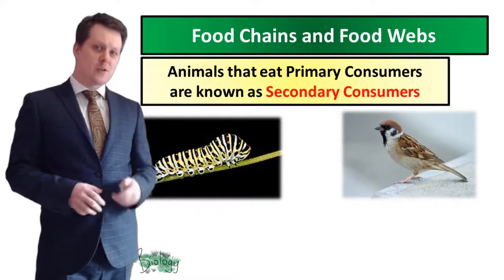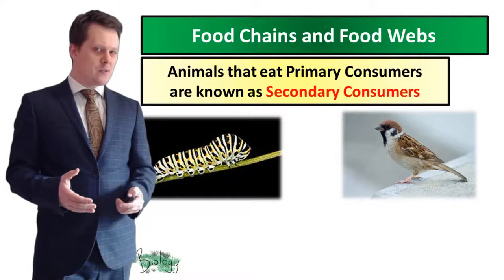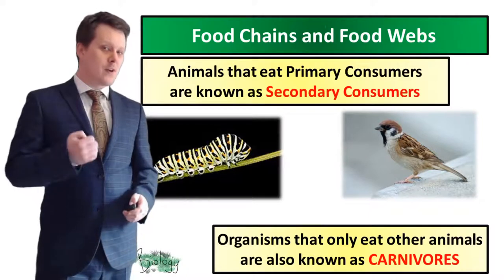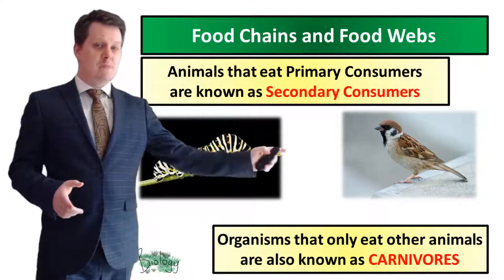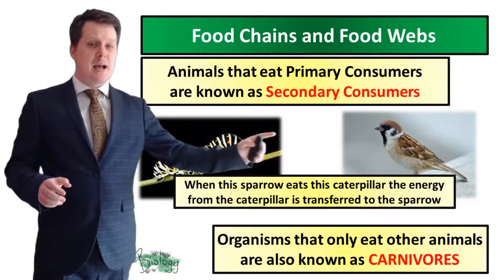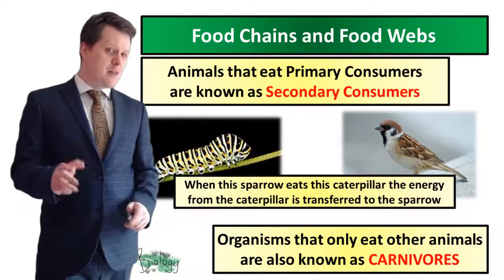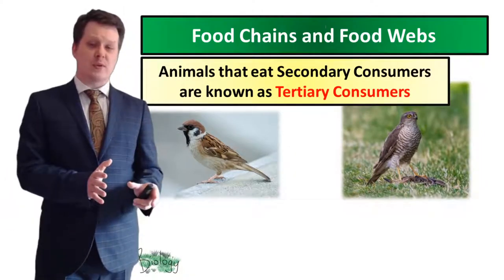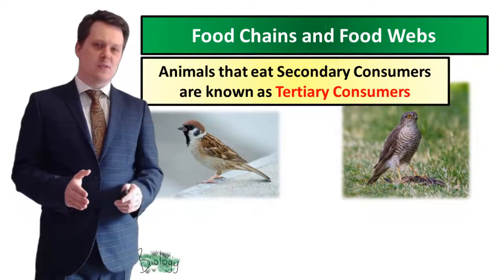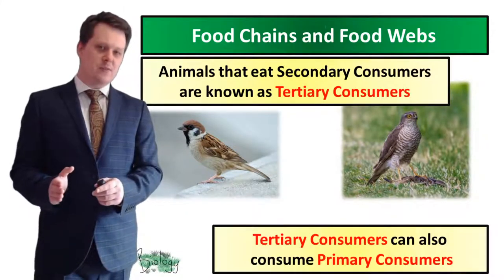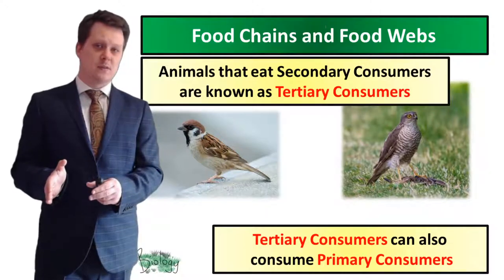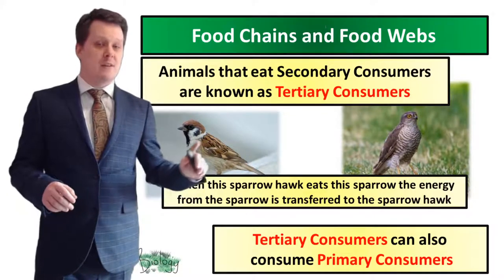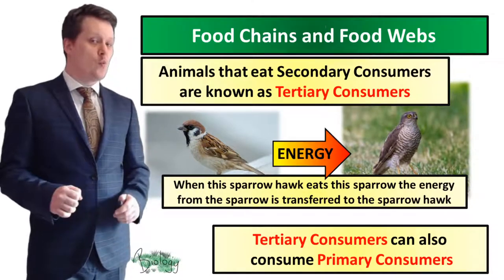Animals that eat primary consumers are known as secondary consumers. If an organism only eats other animals it is known as a carnivore. When a sparrow eats a caterpillar, the energy from the caterpillar is transferred to the sparrow, and we represent this with an arrow. Animals that eat secondary consumers are known as tertiary consumers — though they can also consume primary consumers. When a sparrowhawk eats the sparrow, the energy is transferred to the sparrowhawk, represented by an arrow.